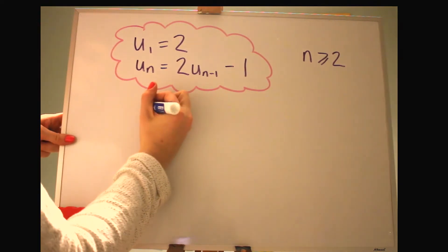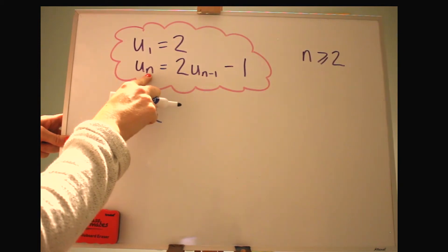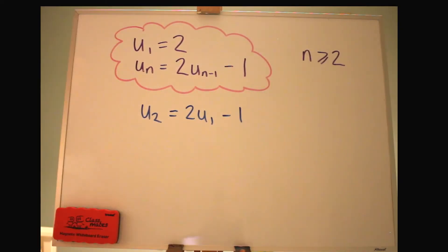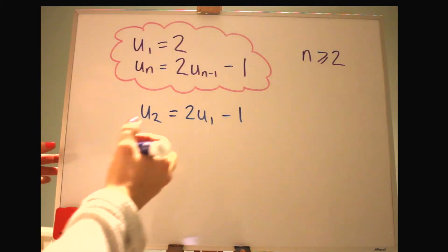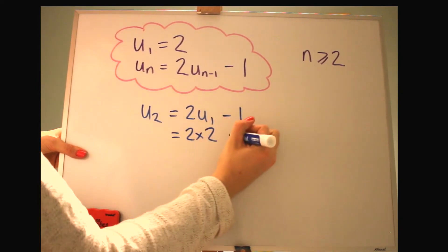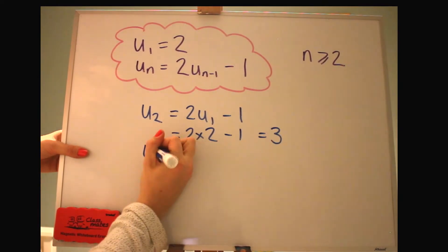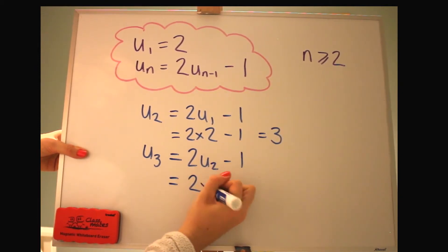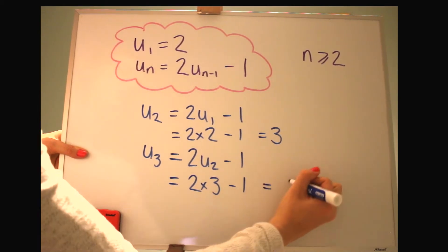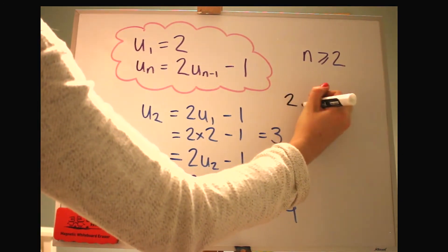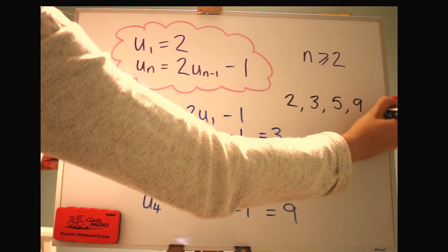So here to get u2, then we let n be 2, and then 2 minus 1 is 1. So can you see, it works the same way, it's just a slightly different way of describing it. So here we are doubling the first term and subtracting 1. So 2 times 2 minus 1, which is 3. Let's do u3 as well. 2 lots of u2 minus 1, which is 2 times 3 minus 1, which is 5. We'll do one more. Do have a go at this yourself. So this time we've got the sequence is 2, 3, 5, 9, and so on.